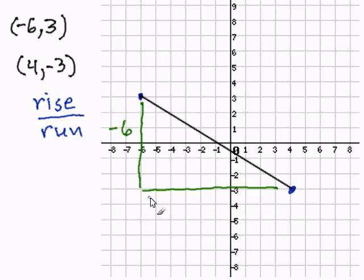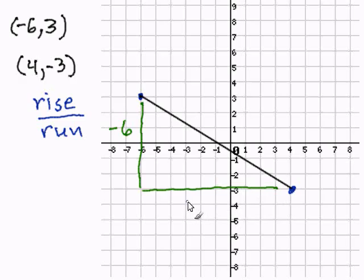So I'm going to count: one, two, three, four, five, six, seven, eight, nine, ten. And we traveled ten to the right.